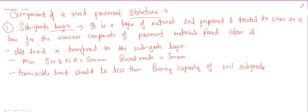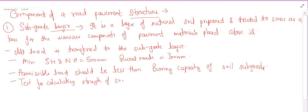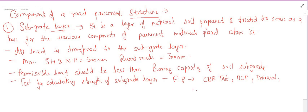There are various tests carried out to find the strength of the subgrade layer. For a flexible pavement, the commonly used tests are the CBR test (California Bearing Ratio test), the DCP test (Dynamic Cone Penetrometer test), triaxial or direct shear test, and the plate bearing test. For a rigid pavement, we use the plate bearing test.